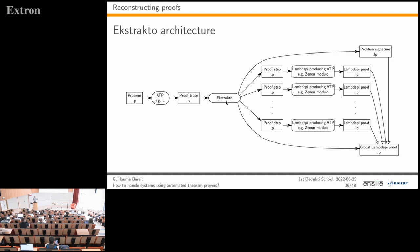Ekstrakto takes each line of the proof trace, produces a small problem for each, calls Zenon Modulo or another Dedukti-proof-capable prover on each step, and then recombines all the lambda-pi proofs for each step into a proof of the original formula—which is quite straightforward.